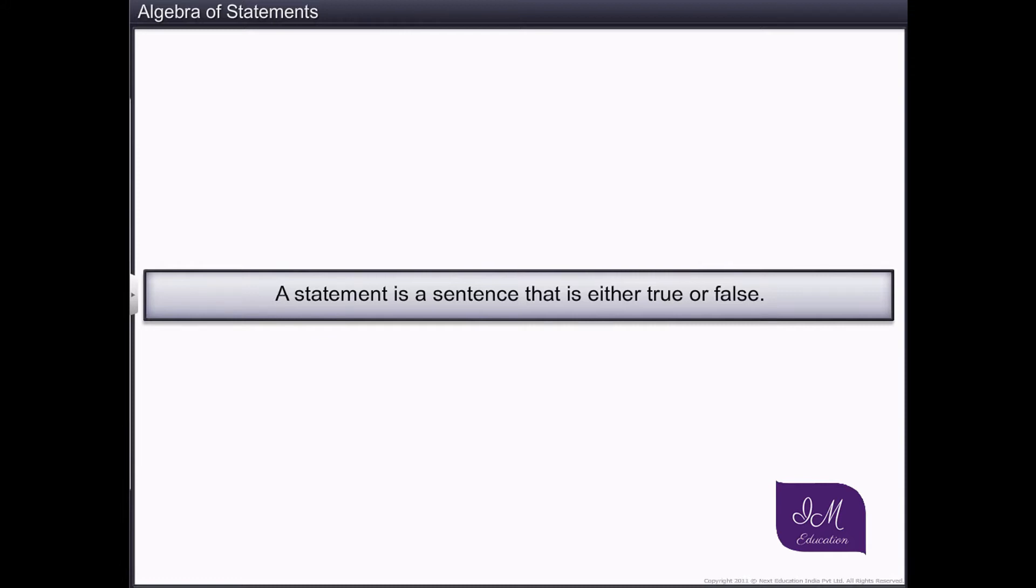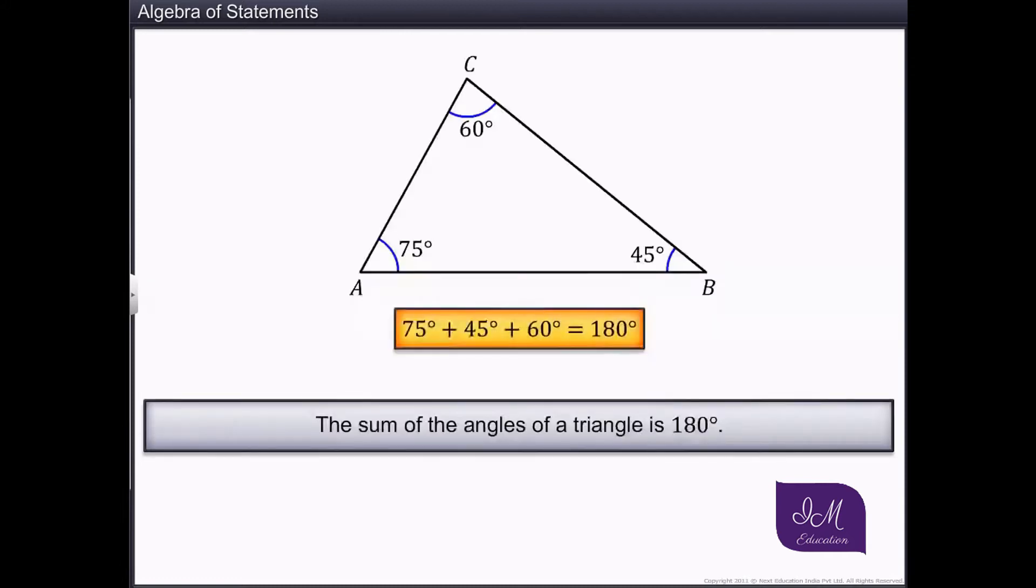For example, the sum of the angles of a triangle is 180 degrees. We know that this is true for any triangle. Hence, we can say that this sentence is true. In other words, the truth value of this sentence is true.